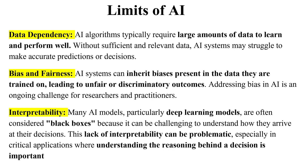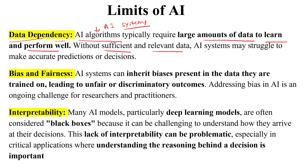The first limit is data dependency. AI algorithms typically require large amounts of data to learn and perform well. Whatever AI algorithm or AI system you use, they need a large amount of data so they can learn and perform well. Without sufficient and relevant data, AI systems cannot make proper or accurate predictions.